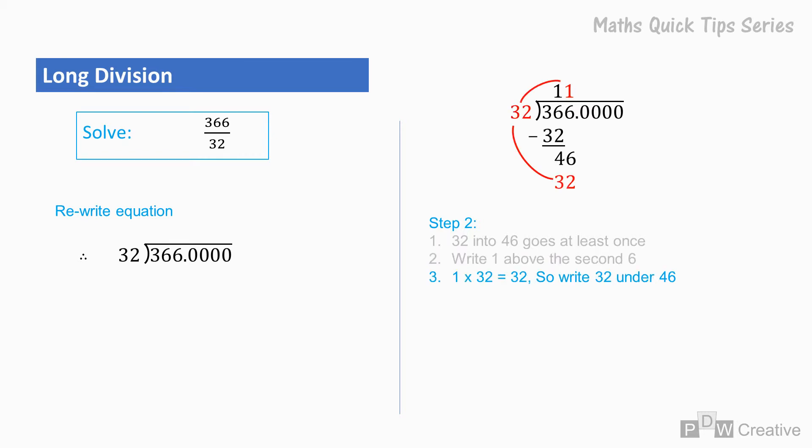Then 1 times 32 is 32, so 32 goes under the 46. 46 minus 32 equals 14, so 14 goes under the 32. The final part of step 2 is to carry the 0.